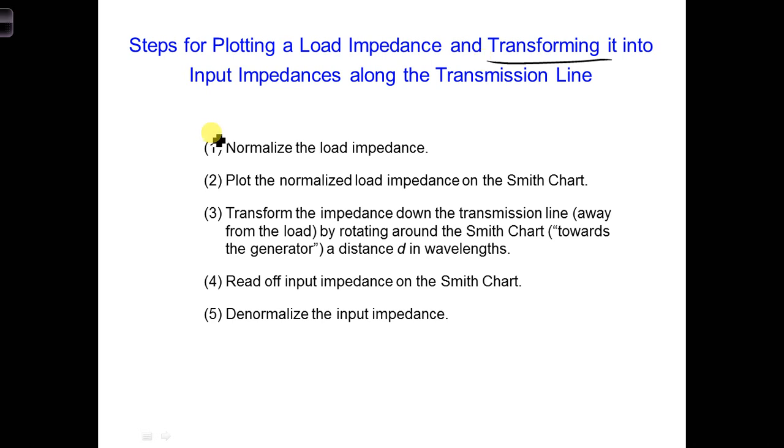To do this, we're going to follow the five steps shown here. First, we're going to normalize the load impedance relative to Z naught. Then we're going to plot that normalized load impedance on the Smith chart. Now once it's normalized, we're going to use lowercase z's.